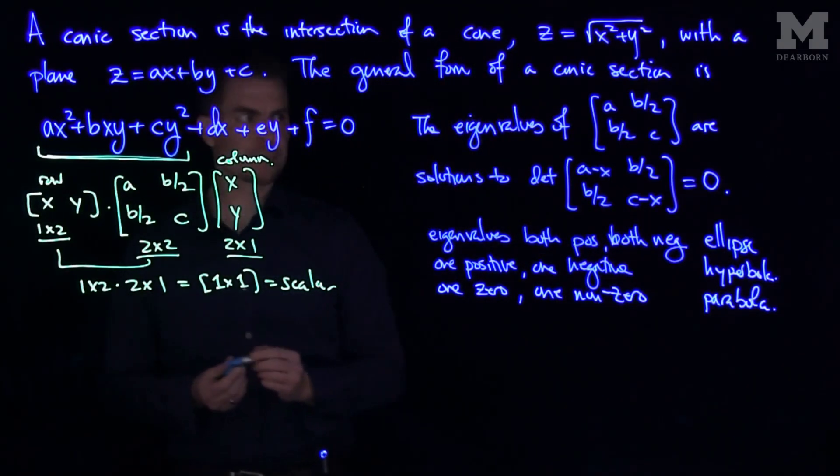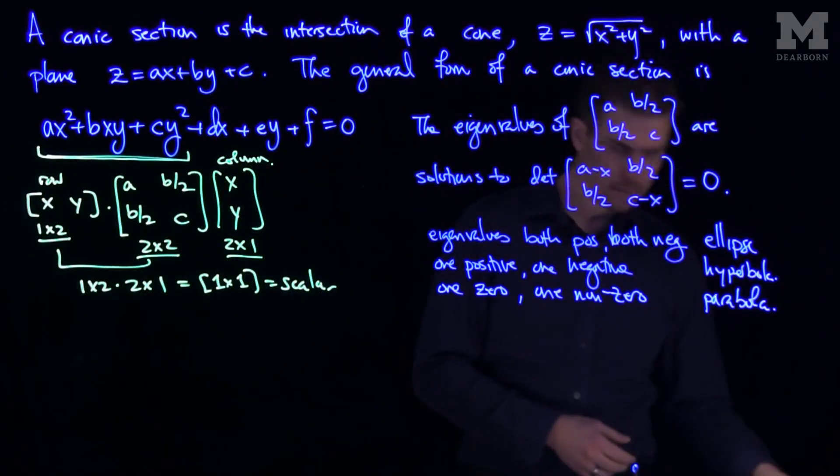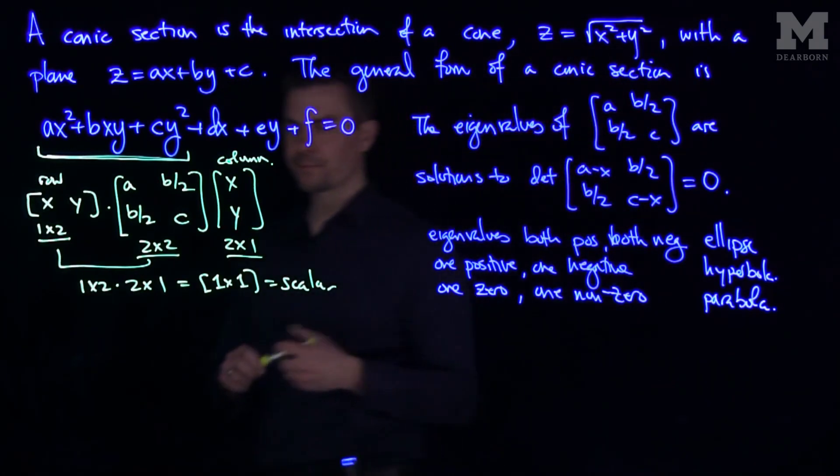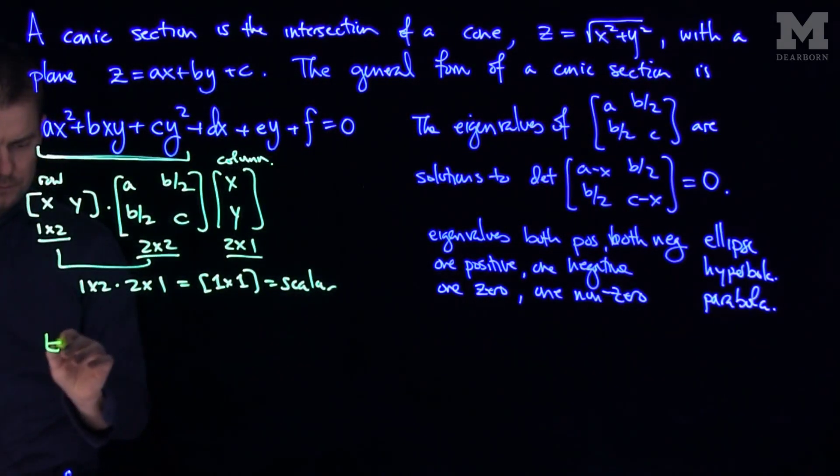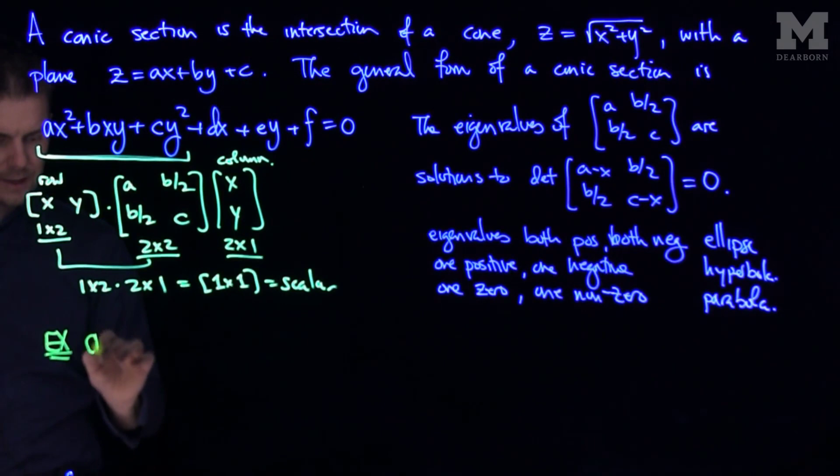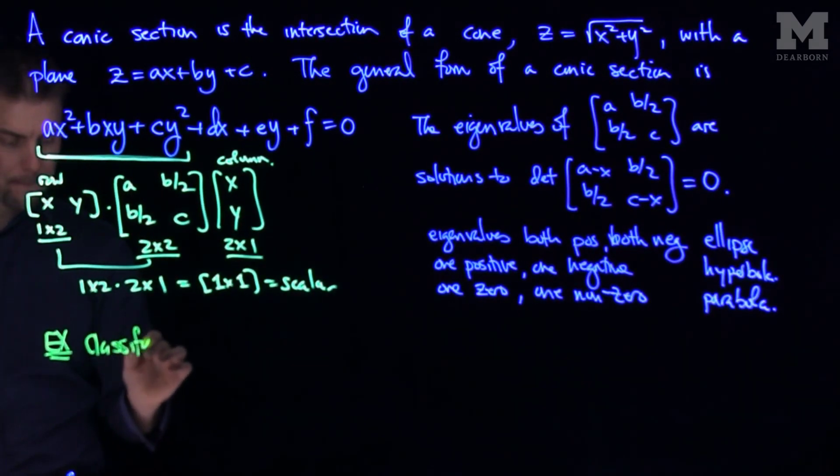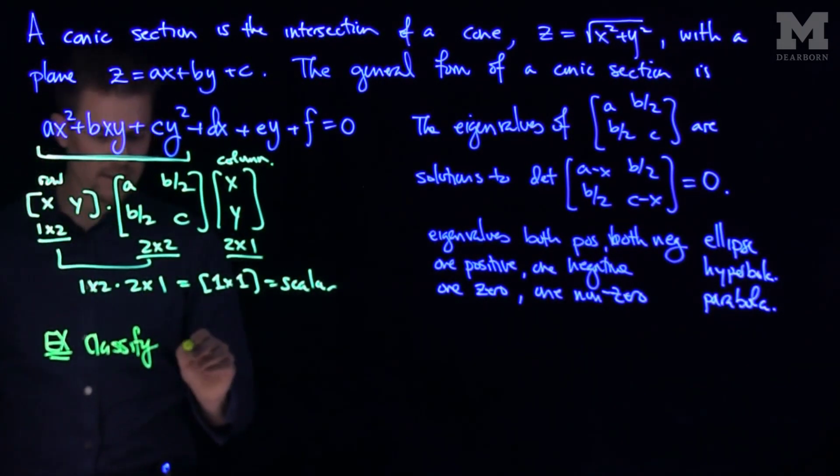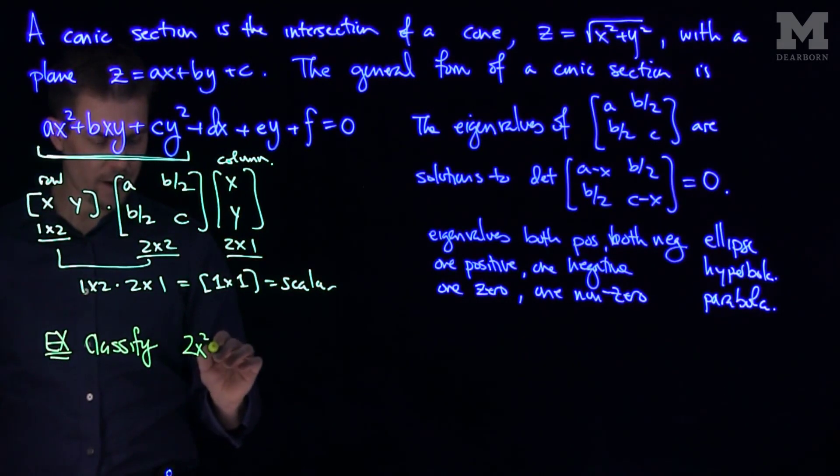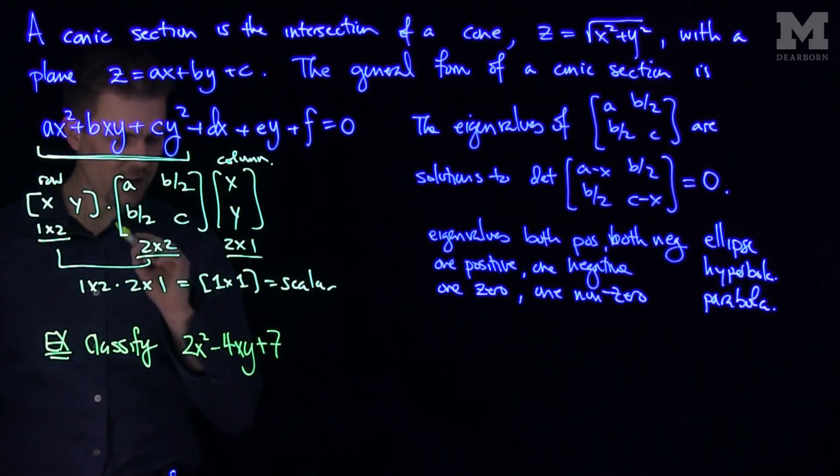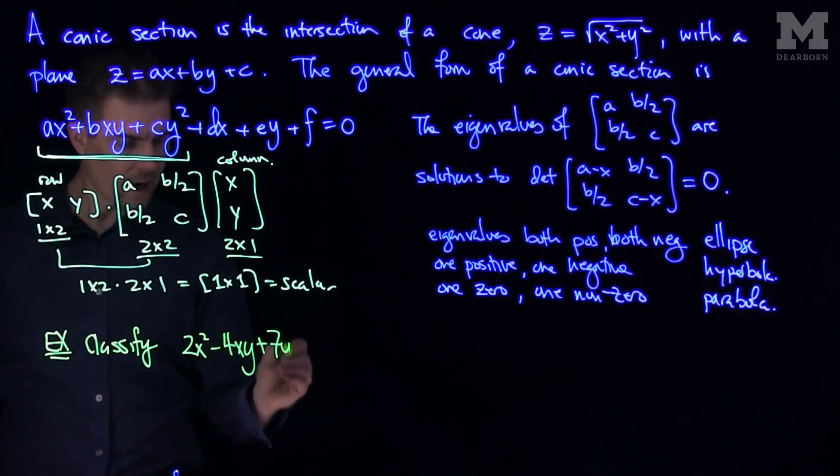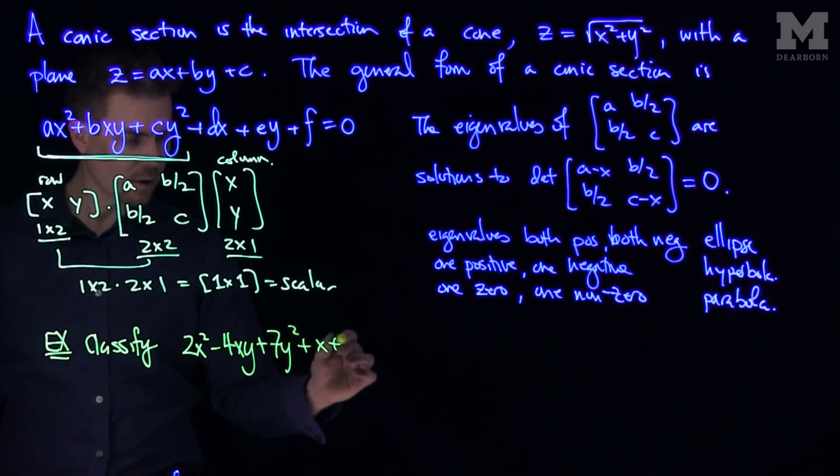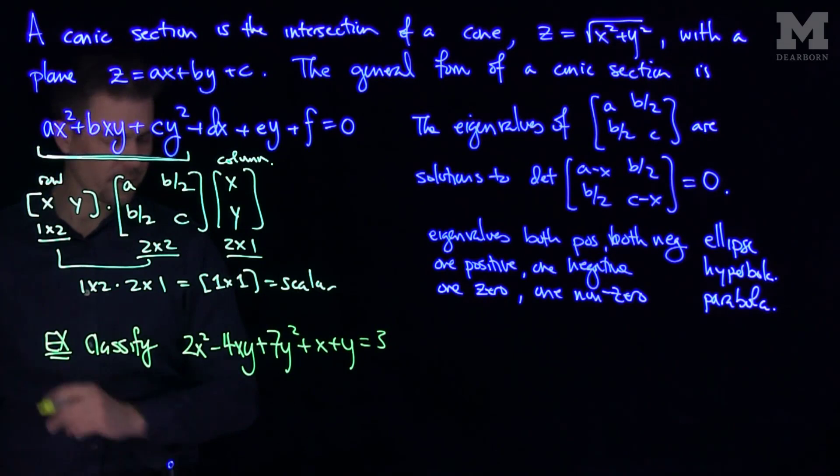So let's do an example of this. Here's an example. Let's classify 2x squared minus 4xy plus 7y squared. And the linear terms are irrelevant. It equals three.